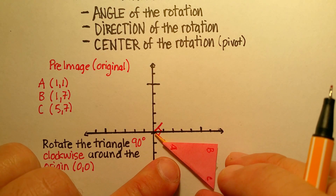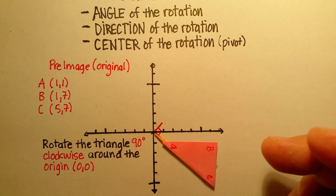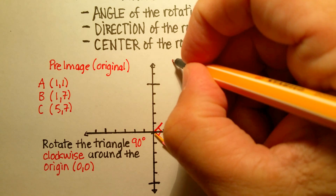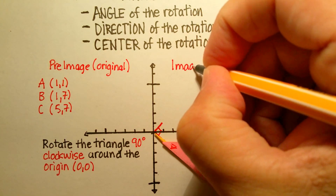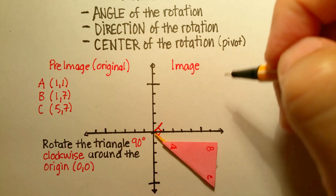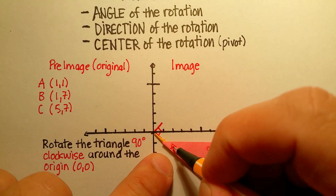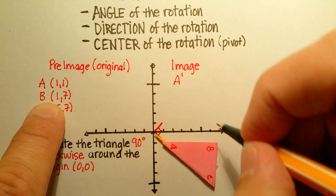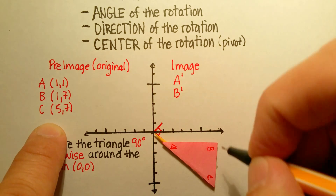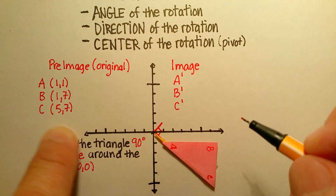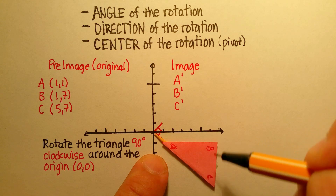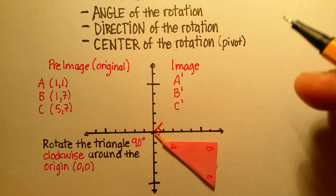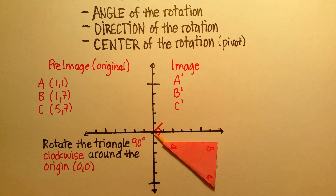I want you to come up with what the new location of the rotated image is. Remember, this is called the image — that's where the triangle ends up. Notice that we can't just call this A anymore; now we call it A1, the B location B1, and the C location C1. Take a second and estimate the new coordinates for the three different vertices — you can stop the video right here.